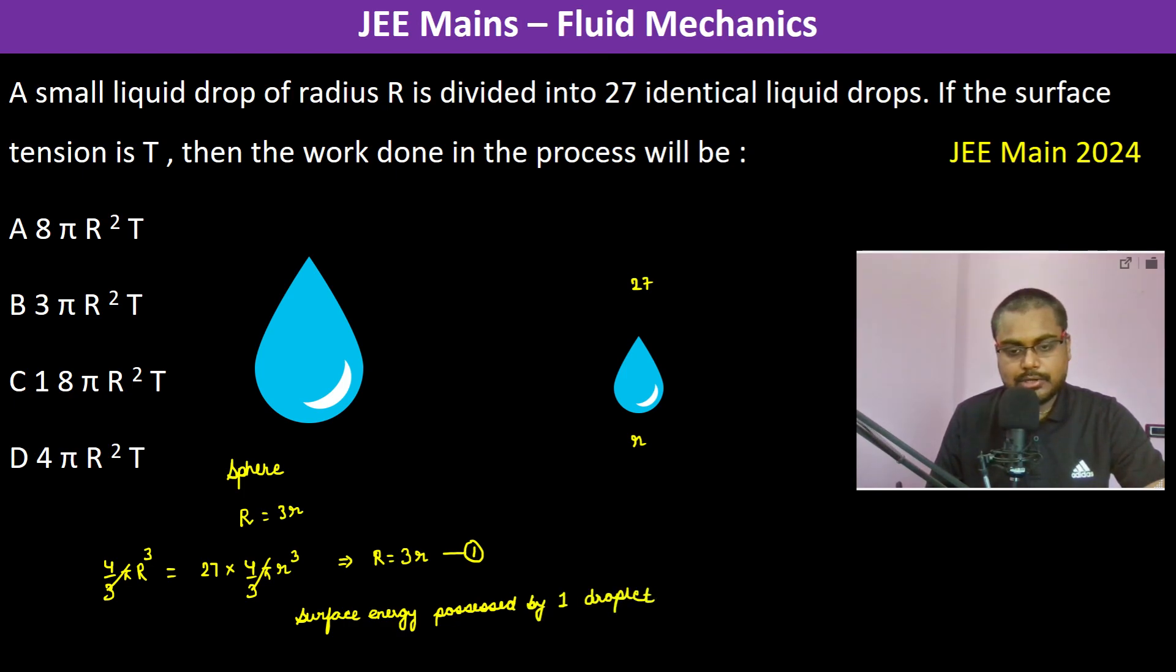Surface energy is equal to surface tension into the surface area. The surface area of one sphere is 4 pi r square. So therefore the total energy possessed is T into 4 pi R square, which is equal to T into 4 pi, and R is 3r, so therefore it is going to be 9r square.